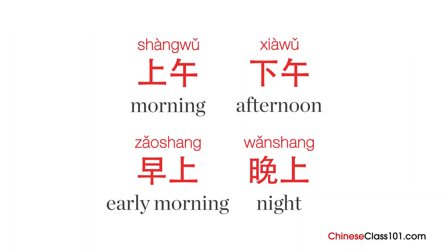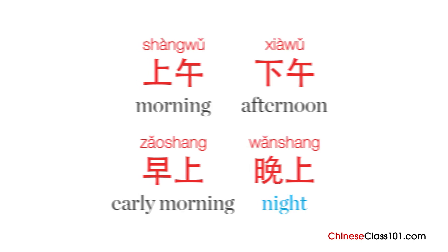In spoken language, people often use 上午, 下午, 早上, and 晚上 to be specific. 上午 means morning, 下午 is afternoon, 早上 is early morning, and finally 晚上 is night.